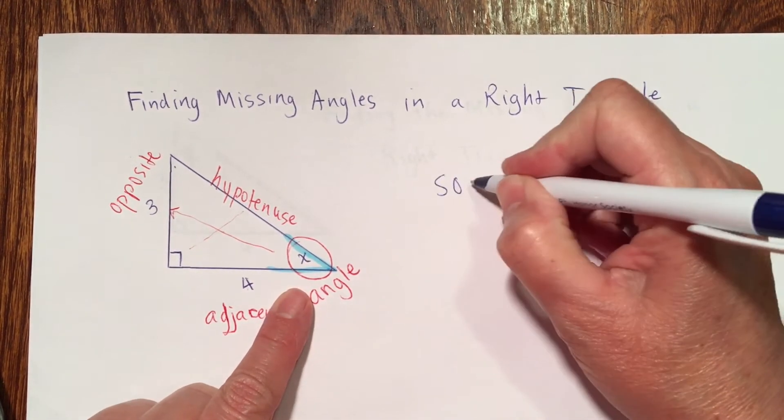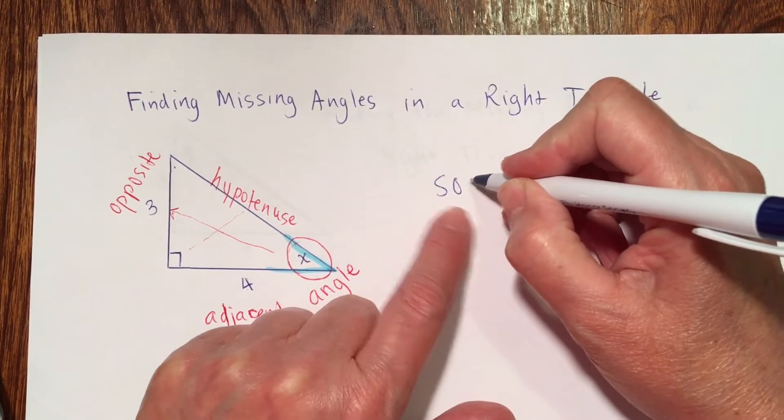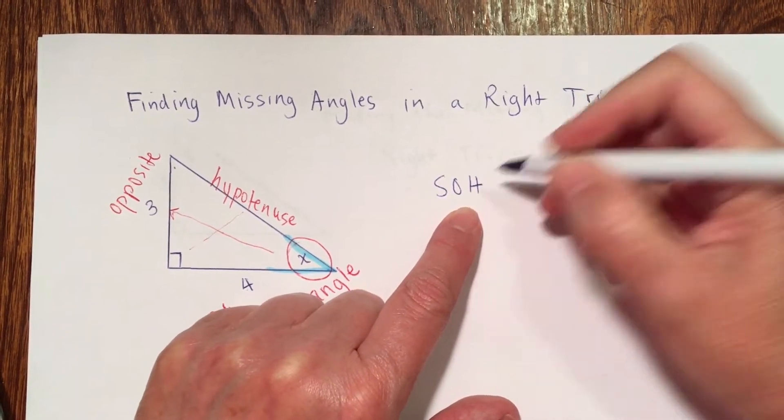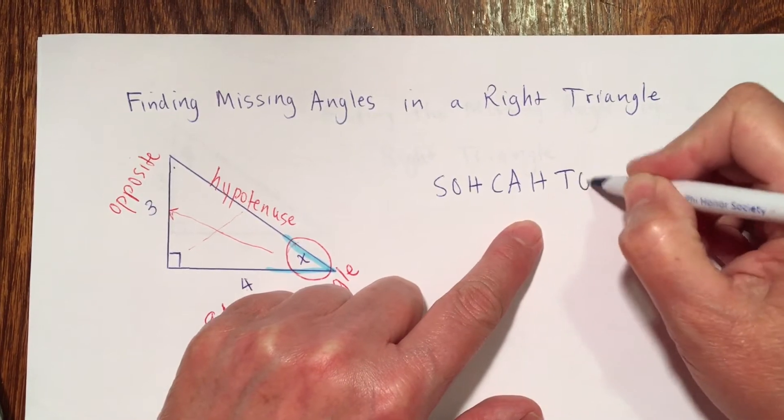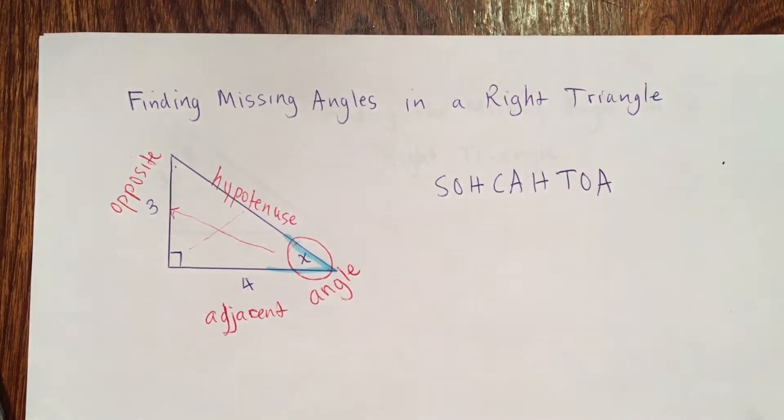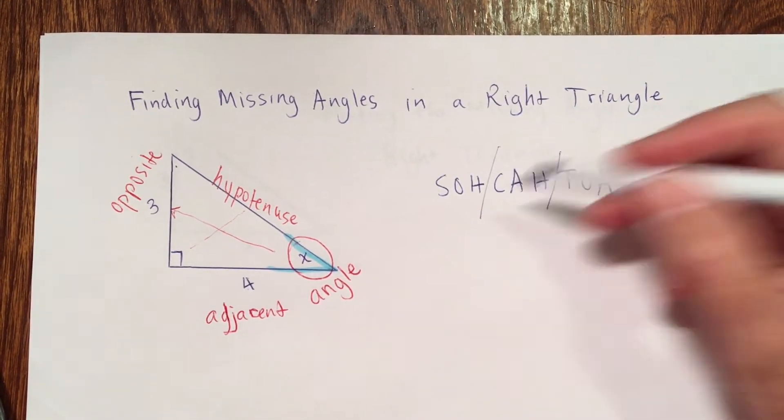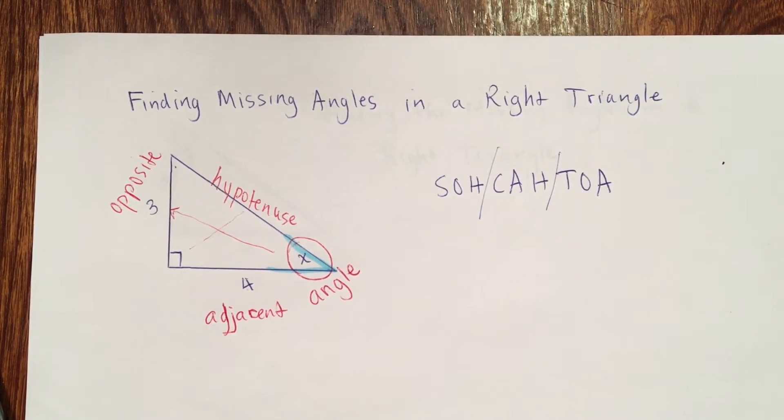So we're looking for angle x and if I go with SOHCAHTOA, sine opposite over hypotenuse, cosine adjacent over hypotenuse, and tangent opposite over adjacent. I'm going to split that. There's really three formulas in there. The formula for sine, the formula for cosine, and the formula for tangent.